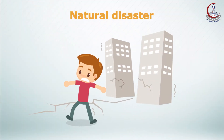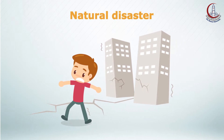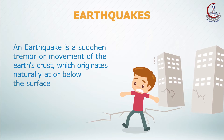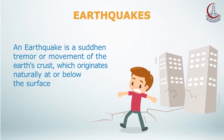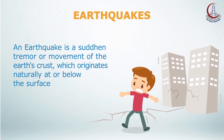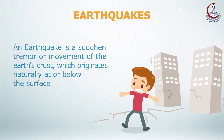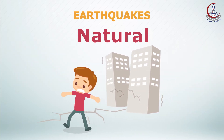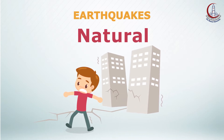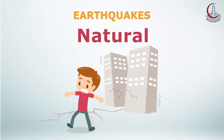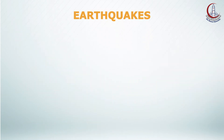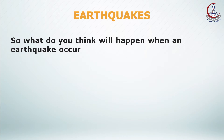Earthquakes are one of the causes of natural disasters. An earthquake is a sudden tremor or movement of the earth's crust which originates naturally at or below the surface. The word natural is important here since it excludes shockwaves caused by man-made explosions and landslides caused by construction work. So, what do you think will happen when an earthquake occurs?